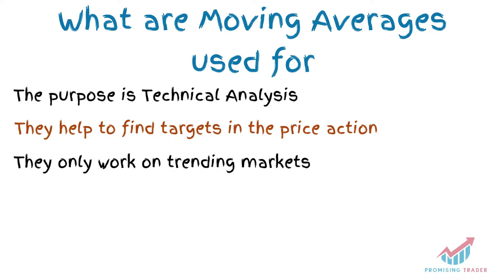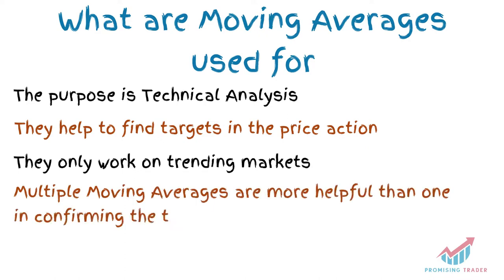They tell you this even better if you use more than one. If the one with the shorter period, for instance a 10 Moving Average, is above a longer one, for instance a 50 Moving Average, and the price is above both, this is a stronger confirmation that the trend is bullish, while the opposite defines a bear market. Moving Averages, on the other hand, are totally useless when the market is not trending and is moving laterally, as they keep crossing each other and it is impossible to make predictions based on them.